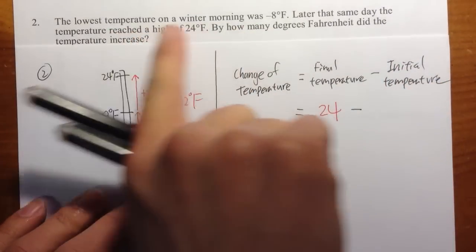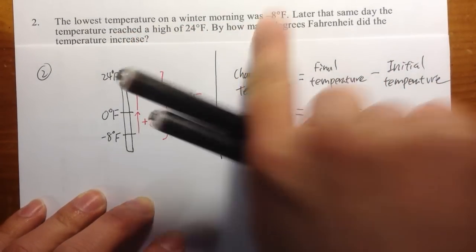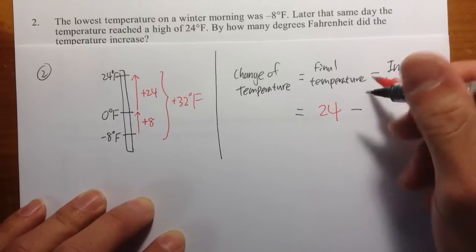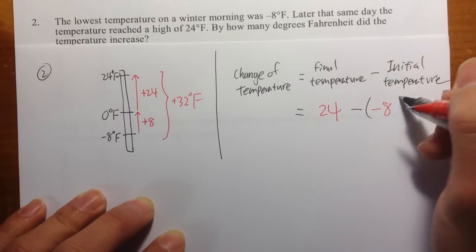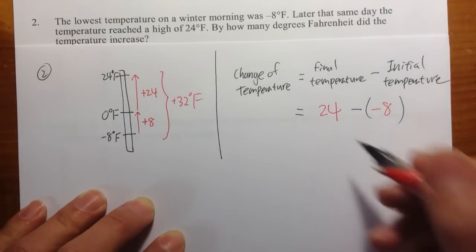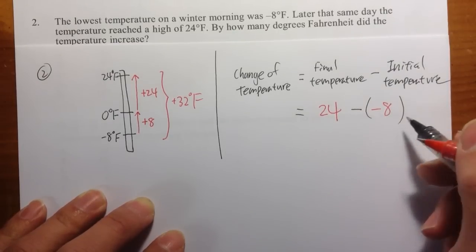Initially, we measured the temperature, and it was negative 8 degrees. And I will subtract negative 8. And usually, when we have negative numbers, I'll put it in parentheses.